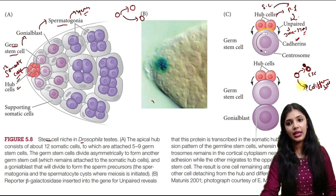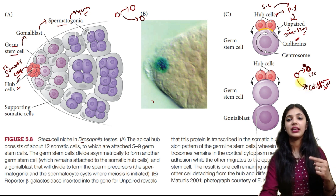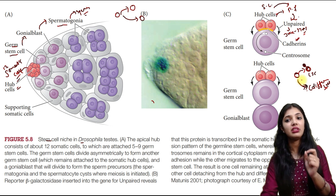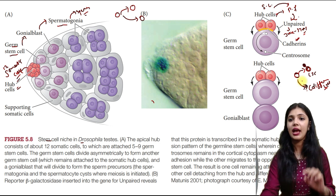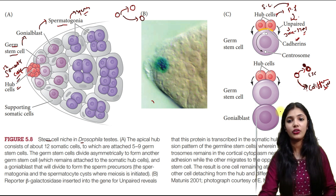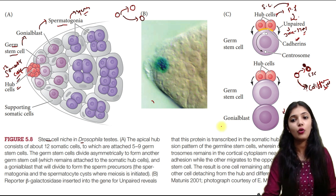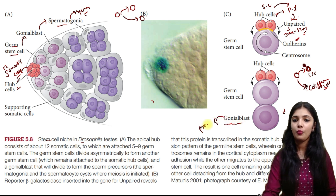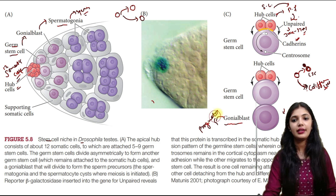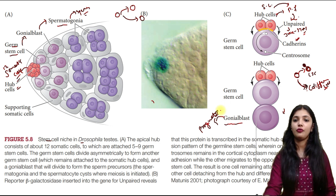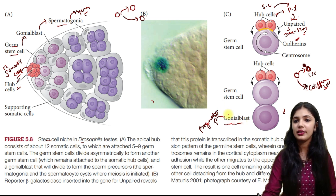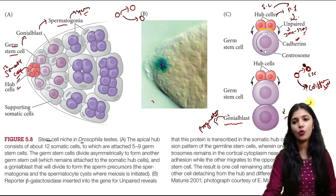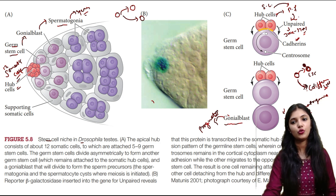The differentiated cell does not interact with the hub cell because it does not have the cadherin cell adhesion molecule, so the paracrine factors cannot reach it. That is why the gonial blast — which is a progenitor cell, a precursor for the sperm cell — is formed. This progenitor cell will later give rise to spermatogonia, and the spermatogonia after division will give rise to sperm.